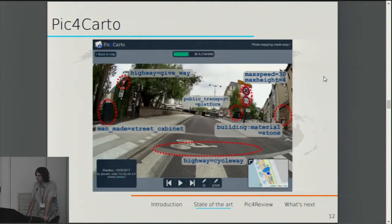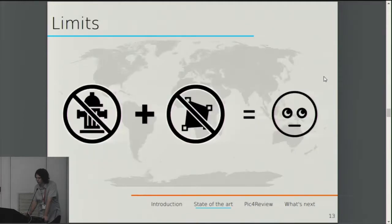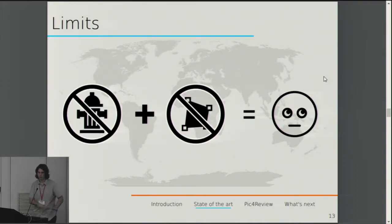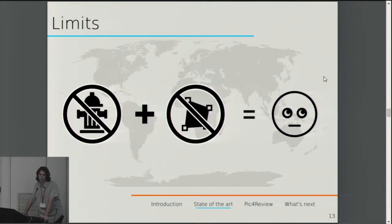Pick4Carto was a tool to take all the available free-license pictures on the web from all the providers, and make them available for the community. You select an area and can see every picture in the area using a slideshow, so you can see everything in the area and then set data in OSM. But it had some limits: the tool was too generic, no predefined area, you can work everywhere but as you can work everywhere, nobody works anywhere. And you don't have a specific thematic — there's nothing leading you to say 'today I want to add traffic signs.' So the tool was not really useful for the community.